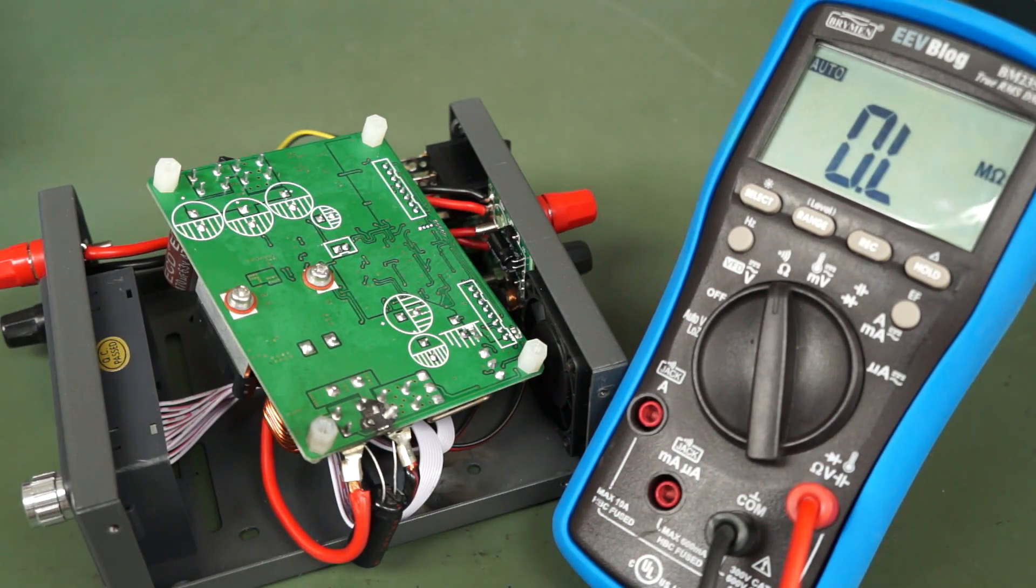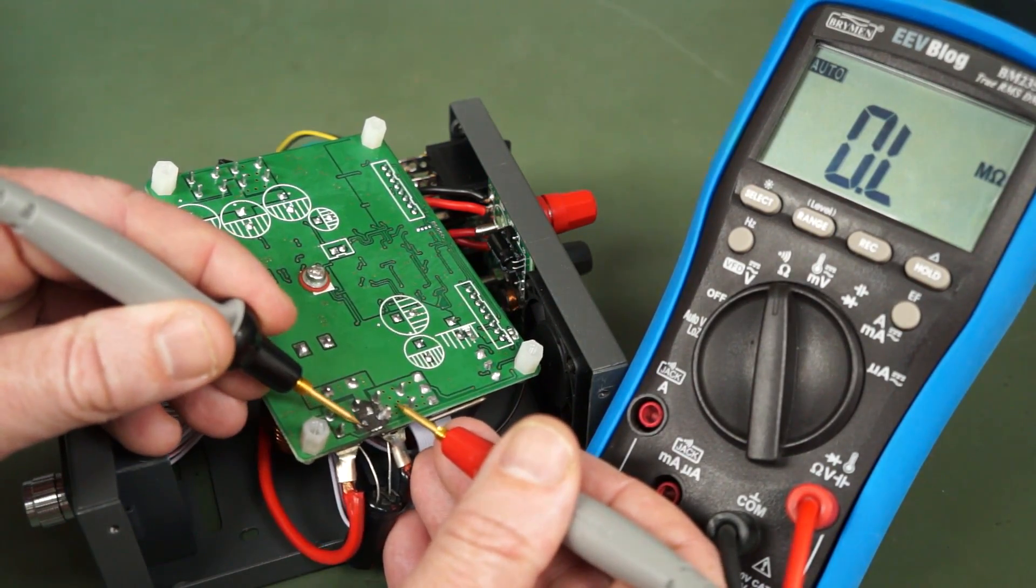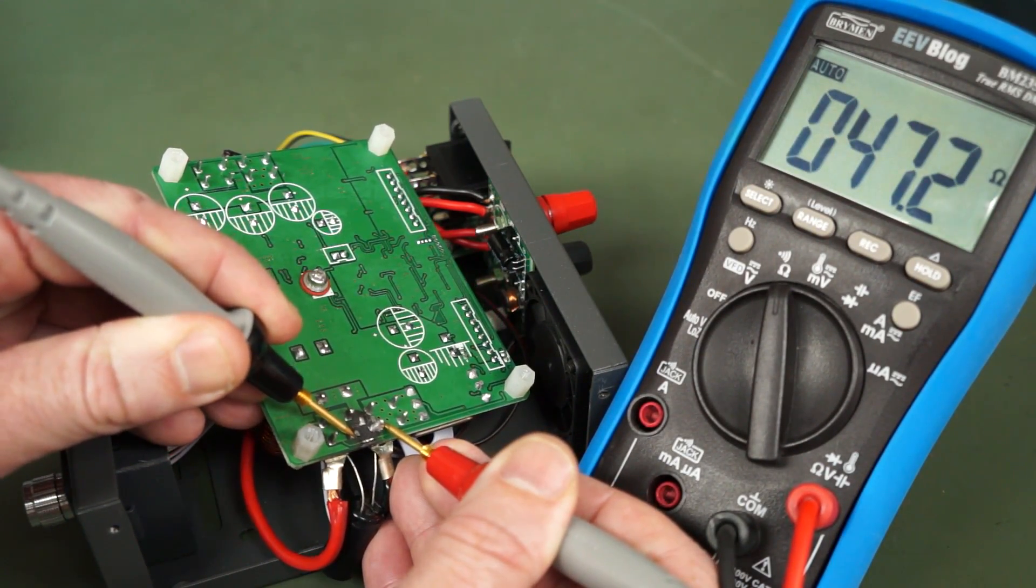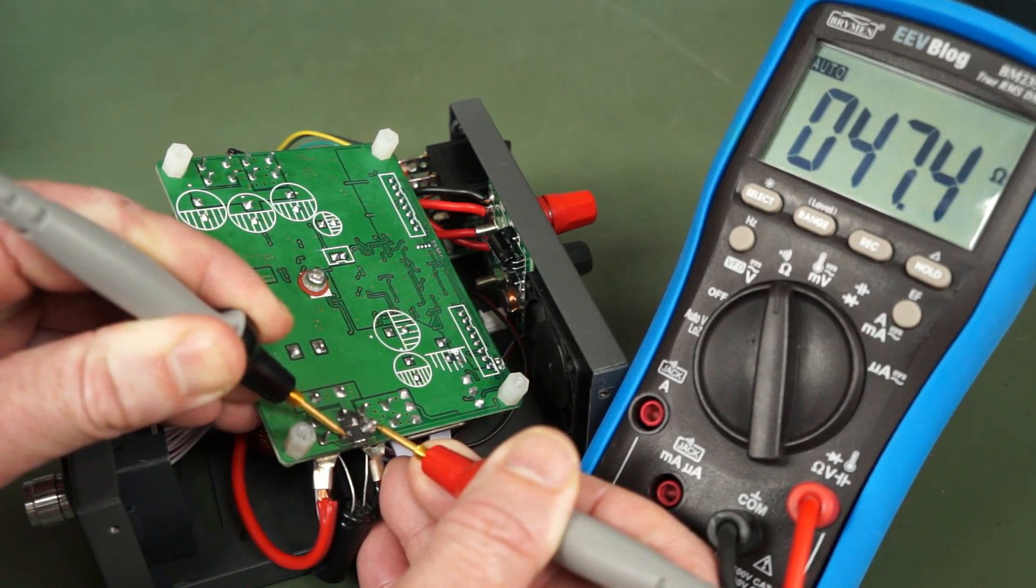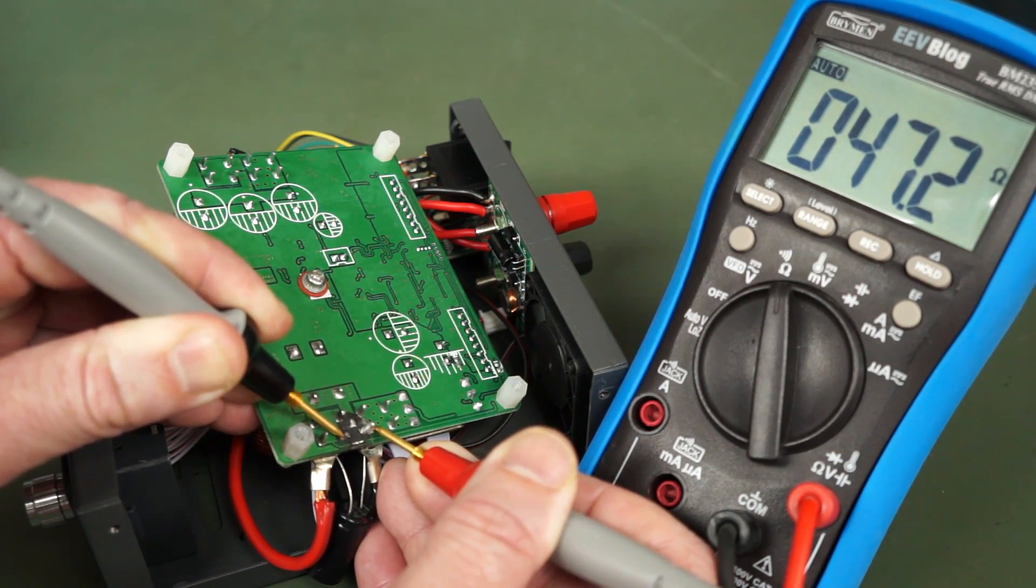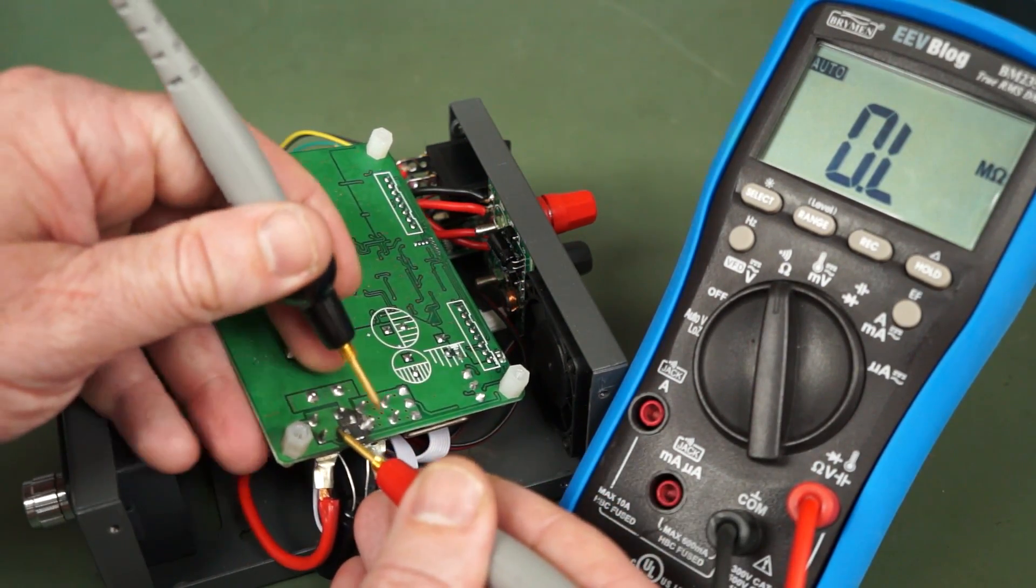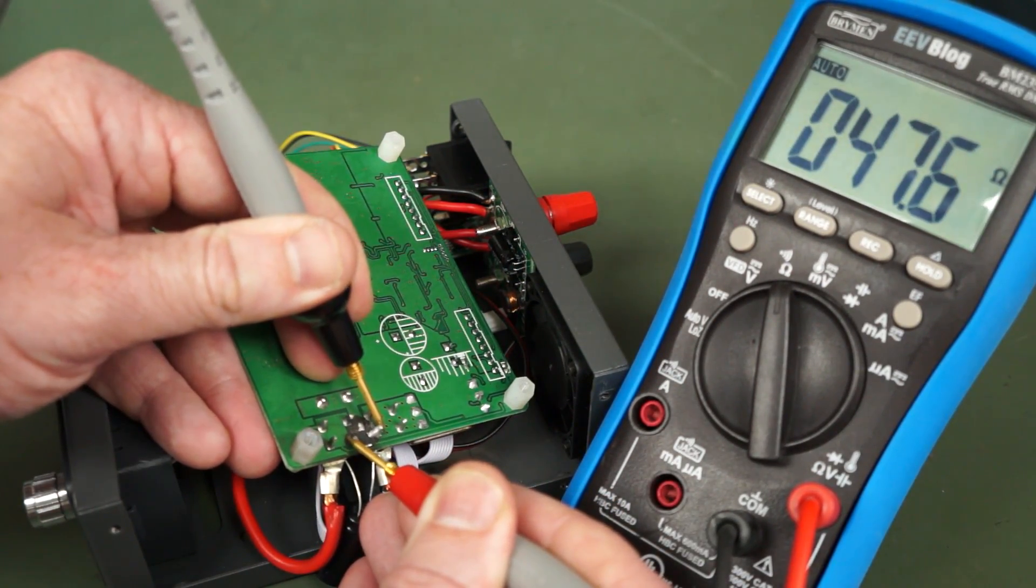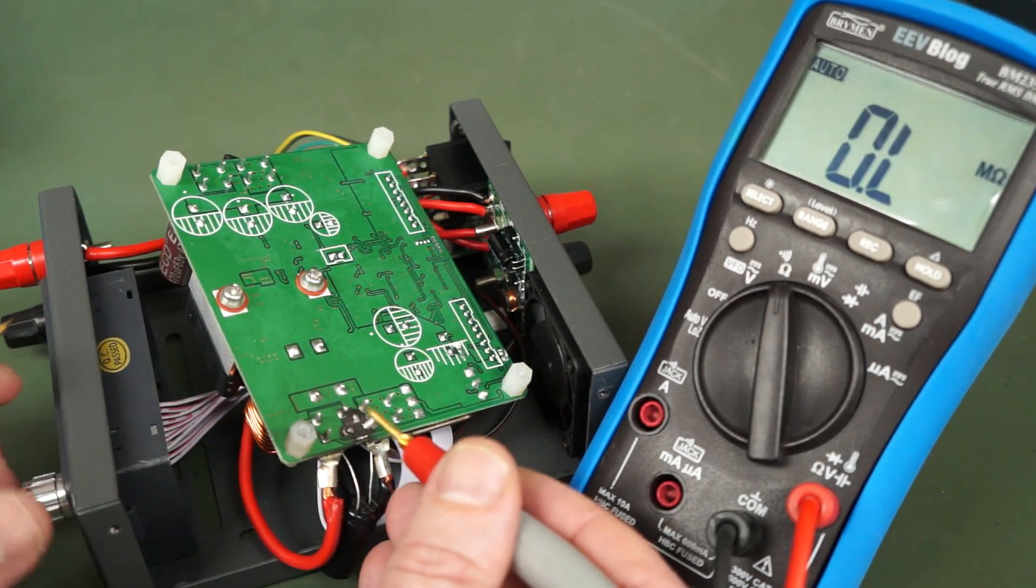So it's actually conducting a running across the output and that was what was drawing the quiescent current and causing the thing to trip. Now I did actually measure this before I powered it up in the video. You didn't see that. And it was in the order of tens of K or something like that. But it's now 47 ohms for example, and this will most likely change with the applied voltage as well. So yeah, it's physically changed.